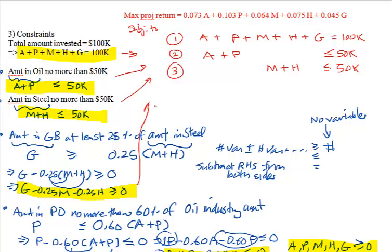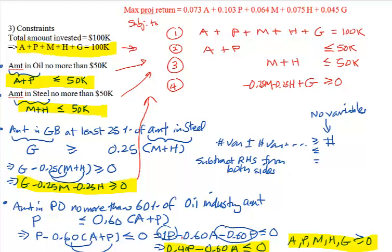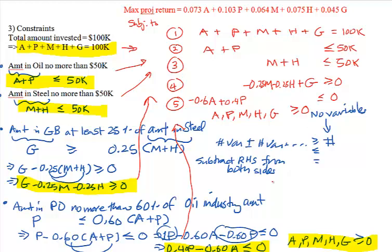Constraint four from the government bonds guideline, with G as the last term: −0.25M − 0.25H + G ≥ 0. Constraint five from the Pacific Oil guideline: 0.4P − 0.6A ≤ 0. And finally, non-negativity: all variables ≥ 0. That is the entire linear programming model for this investment example.